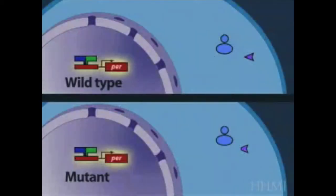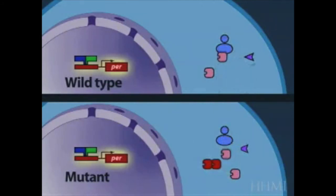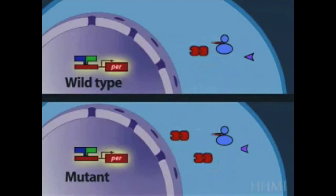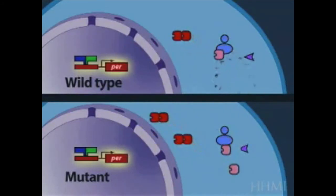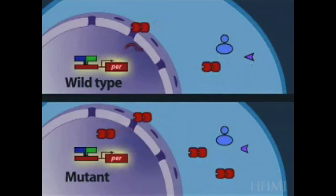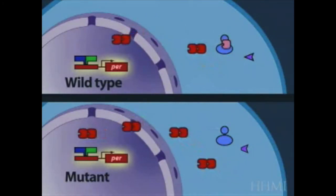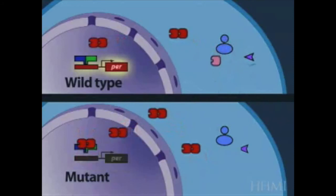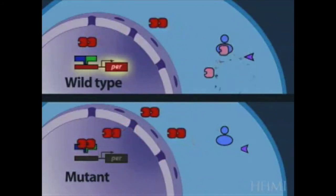Here, a wild type hamster and a mutant hamster are compared. This shows how a mutation in casein kinase 1 epsilon results in a change in the timing of production of proteins that influence circadian behaviors. Since the mutant enzyme is less effective at phosphorylating PER, it is suggested that PER dimers accumulate faster in the cytoplasm. This leads to their translocation into the nucleus, which leads to an earlier shutoff.